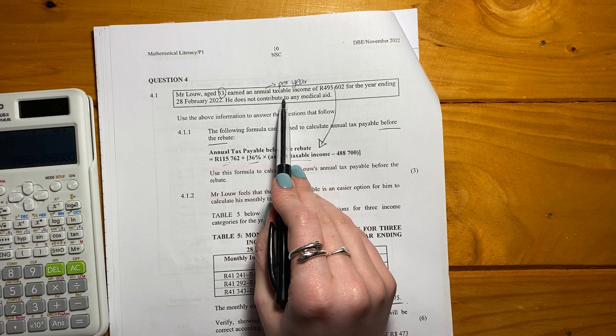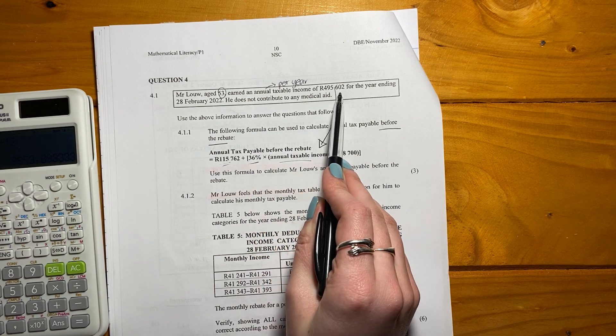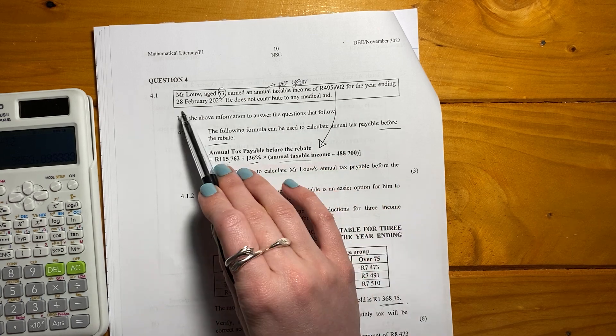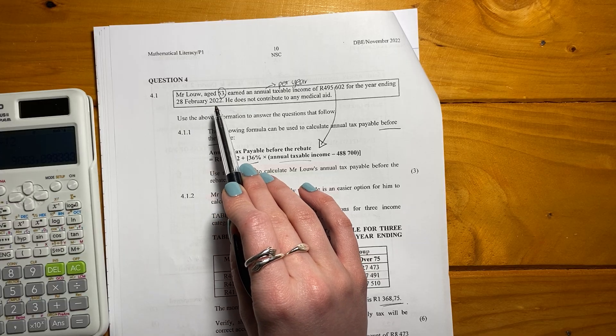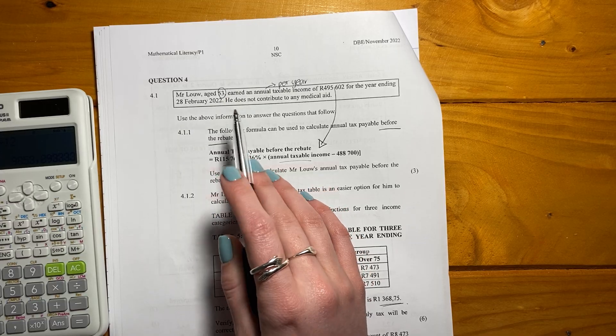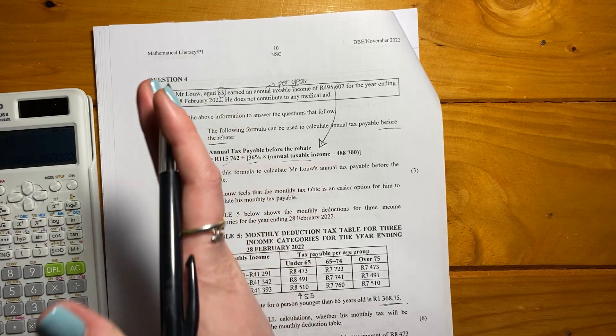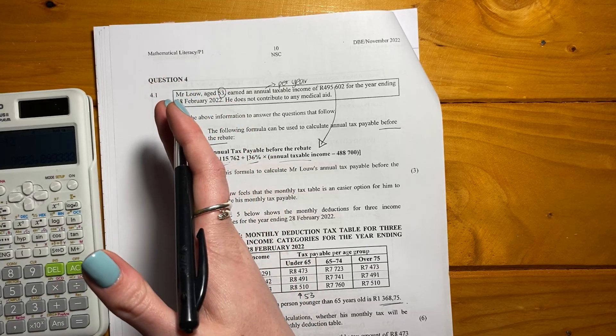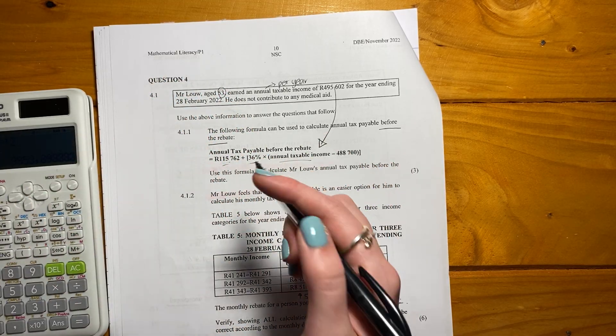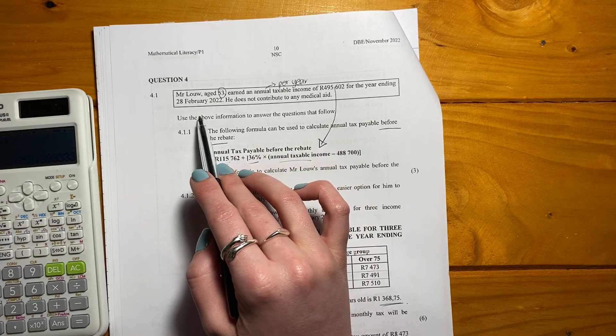So then it says earned an annual taxable income of this much for the year ending 28 February 2020. Now you could be saying, why is it such a weird year? Remember tax years run from the beginning of March in one year to the end of February the next year. That's why they're using this date. It's not just weird.